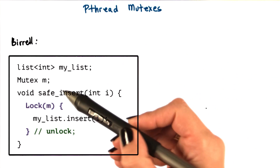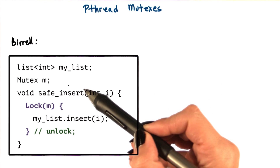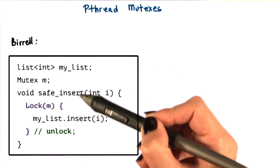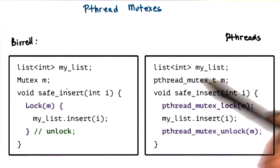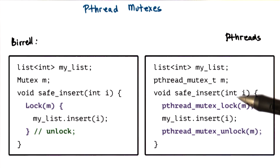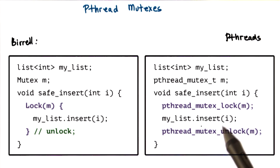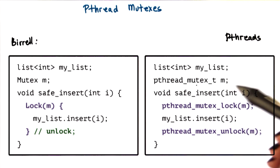As an example, remember that in the thread introductory lecture we implemented the safe insert operation using Birrell's construct. With pthreads, the same safe insert operation would be implemented by explicitly locking and unlocking the mutex around the insert operation in the shared list, my_list. Note also that the mutex is of the appropriate type, pthread_mutex_t.